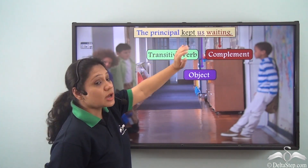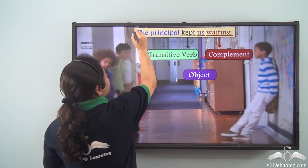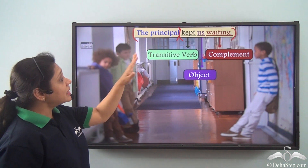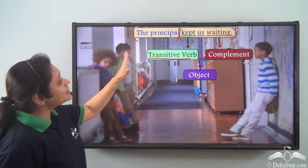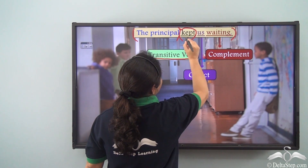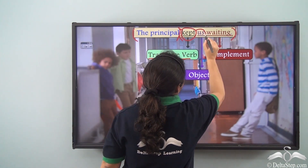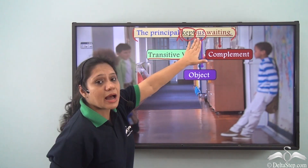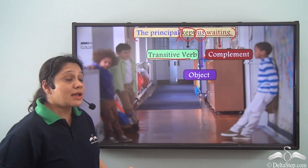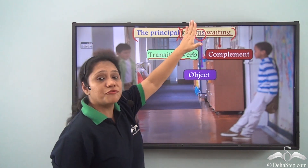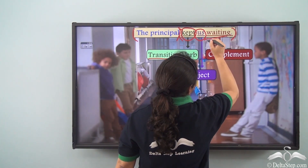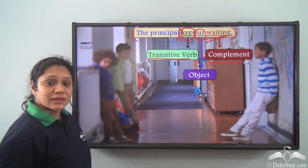'The principal kept us waiting.' In this sentence 'the principal' is the subject and 'kept us waiting' is the predicate. This predicate has a transitive verb 'kept.' The principal kept whom? Kept us. This transitive verb takes the object 'us.' If I just say 'the principal kept us,' the predicate is not complete. But if I say 'the principal kept us waiting,' the predicate is complete and we have a meaningful sentence. So 'waiting' is the complement.